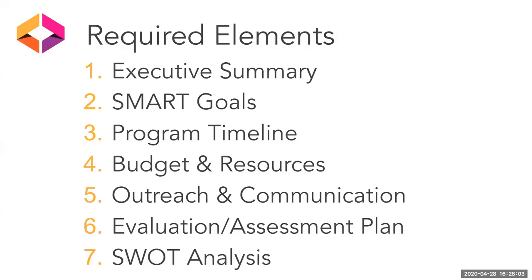There are seven required elements. The first part is the executive summary. You'll write this last, but it actually comes first in your action plan. It should give a concise overview of your action plan, grab your reader's attention, highlight key points, and provide the why. Aim for about 750 words or less.